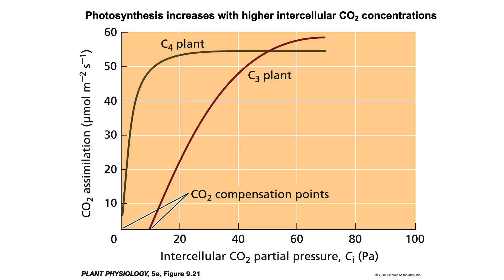CO2 compensation points occur when photosynthesis balances respiration. This is clearly higher for C3 plants, which must utilize photorespiration to salvage CO2 due to the competitive binding of oxygen with rubisco. C4 plants have CO2 concentration mechanisms, as discussed in Lecture 8, which prevent this competitive binding. This plot further indicates that photosynthesis of C4 plants saturates at a much lower internal concentration of CO2, and that C3 plants are most likely to benefit from rising world atmospheric CO2 concentrations with increased photosynthetic rates.